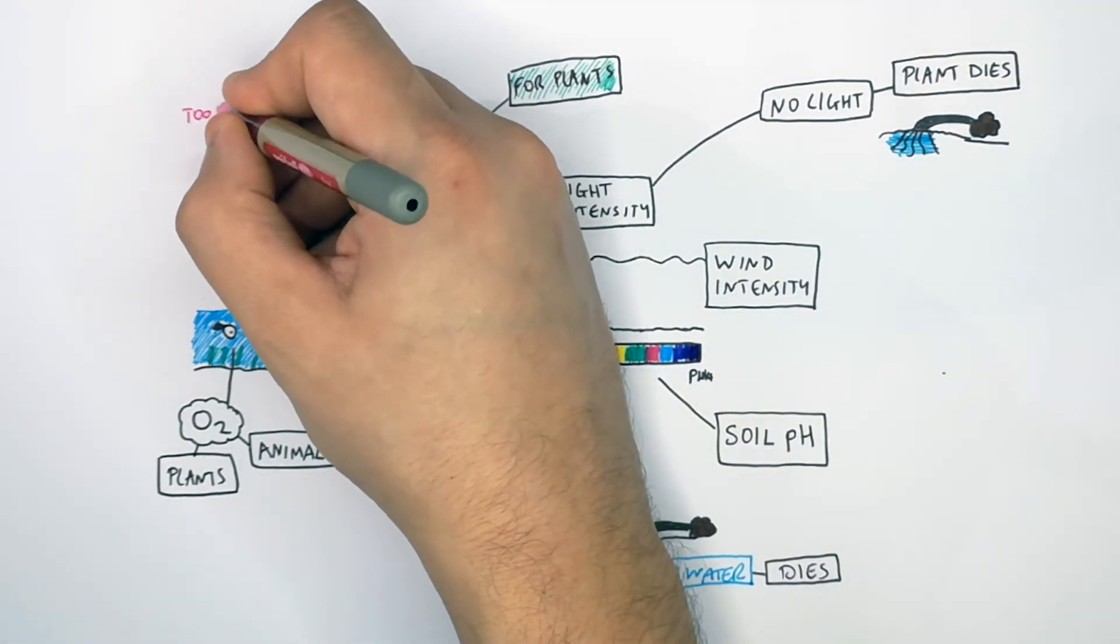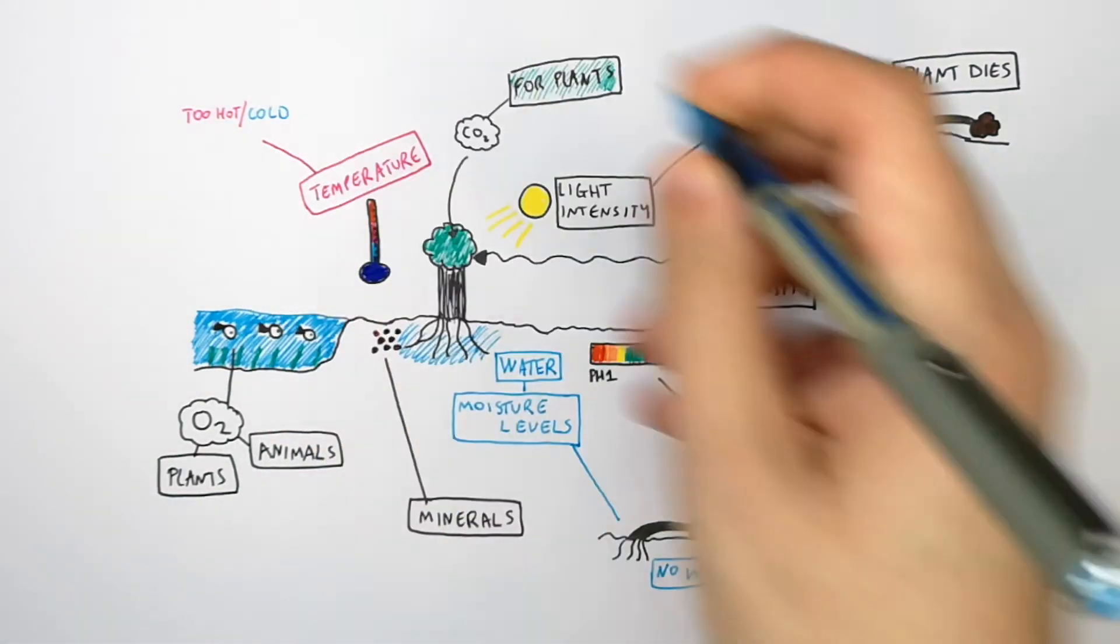If it is too hot or too cold, plants can die because photosynthesis will not happen effectively. And in animals, if it is too hot or too cold and they can't regulate their body temperature, an animal can die as well.